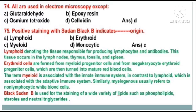Positive staining with Sudan Black B indicates — the answer is option C: Myeloid origin. Lymphoid denotes the tissue responsible for producing lymphocytes and antibodies. Erythroid cells are formed from myeloid progenitor cells and from megakaryocyte-erythroid progenitor cells, which are then turned into mature red blood cells. The term myeloid is associated with the innate immune system, in contrast to lymphoid, which is associated with the adaptive immune system.